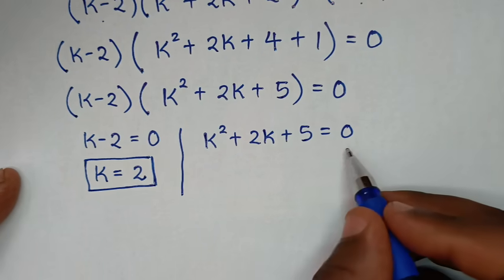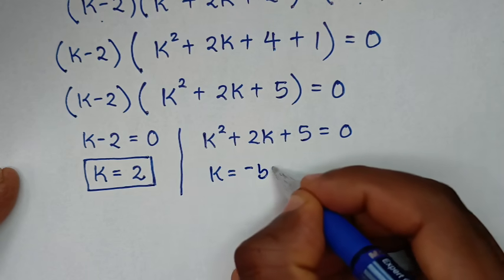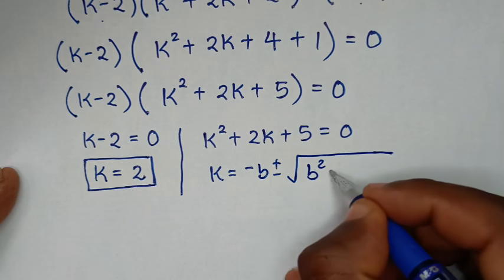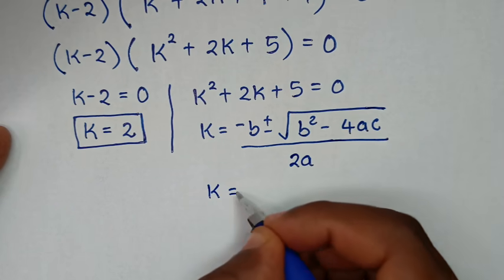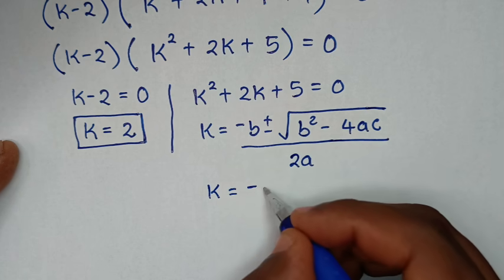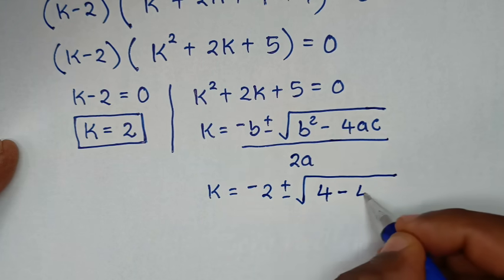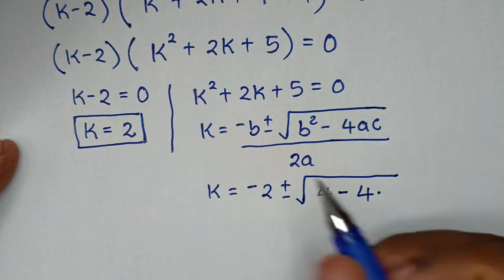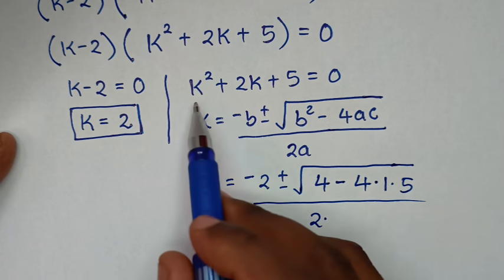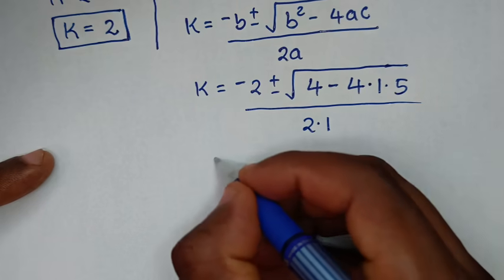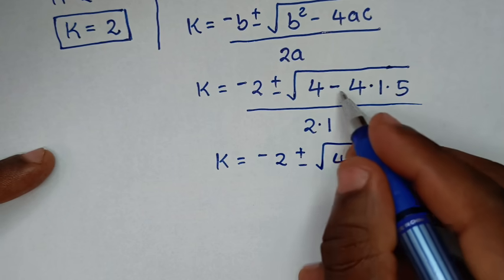The second solution is k squared plus 2k plus 5 equals 0. We solve this using the quadratic formula: k equals negative b plus or minus square root of b squared minus 4ac, over 2a. Here b is the coefficient of k, which is 2, a is the coefficient of k squared, which is 1, and c is the constant, which is 5.